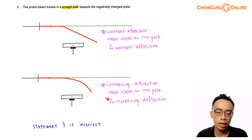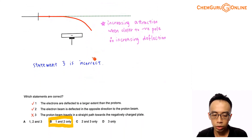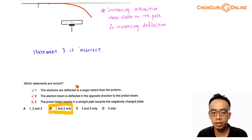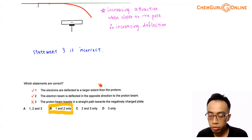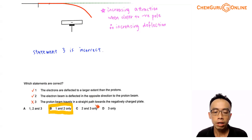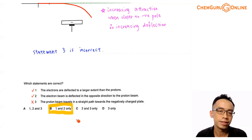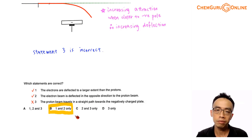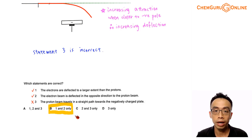So statement 3 is incorrect. To summarize: statement 1 is true — electrons are deflected to a larger extent due to a higher charge-to-mass ratio. Statement 2 is correct — the electron beam is deflected in the opposite direction to the proton beam because they are oppositely charged. Statement 3 is false — the proton beam travels in a curved path, not a straight path. With statements 1 and 2 being true, option B is the best answer. That was the discussion for Paper 1, Question 1. If you found this useful, please give a thumbs up, like this video, and subscribe to my YouTube channel for more weekly video lessons. See you next week!